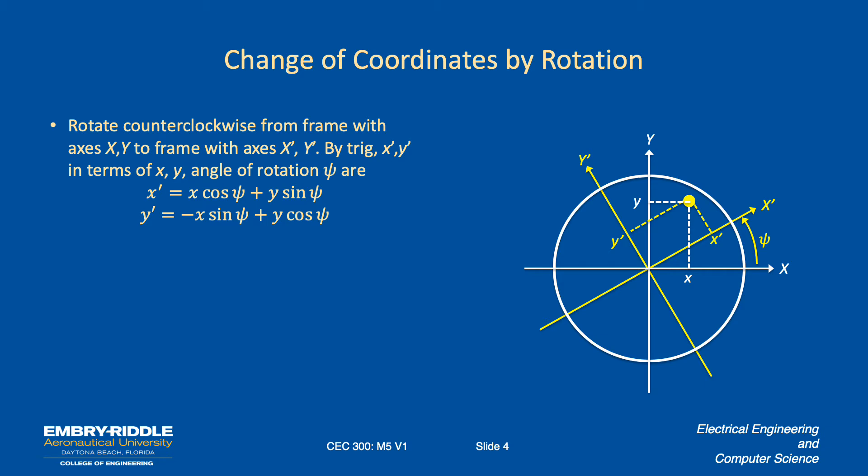So the view here on the right is looking down. The axes labeled x and y could stand for the inertial frame. The axes labeled x prime and y prime could stand for the rotating frame. Here we've just shown that a fixed rotation psi and we have a point and what are the coordinates of the point in one reference frame given the coordinates of the points in the other reference frame.